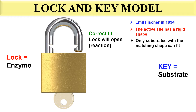According to the Lock and Key Model, the enzyme and substrate should be 100% compatible — the substrate should exactly fit into the active site, and the active site will not change its conformation or shape. It is a rigid molecule.